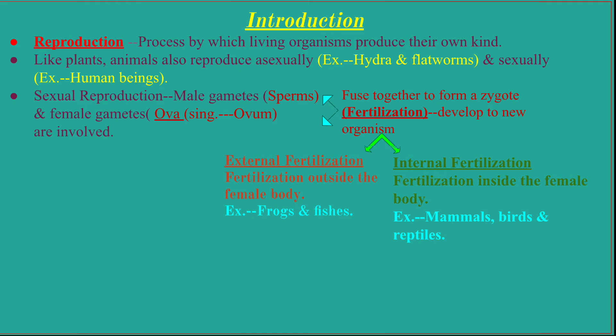Sexual reproduction occurs through two types of gametes: the male gamete and the female gamete. In human beings, the male gamete is the sperm and the female gamete is the ovum (plural: ova). The fusion of these two gametes — sperm and ovum — forms a zygote, and this process of fusion is known as fertilization, which helps grow a new organism.